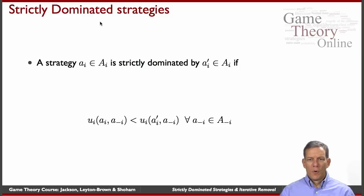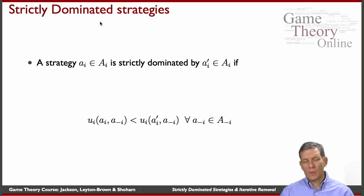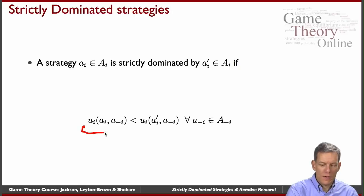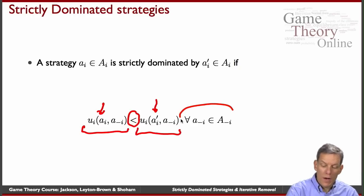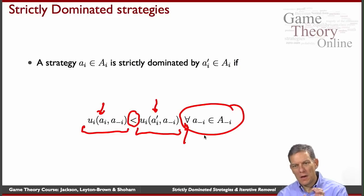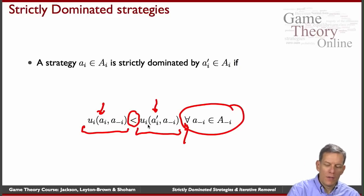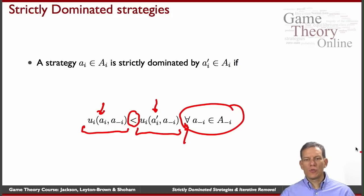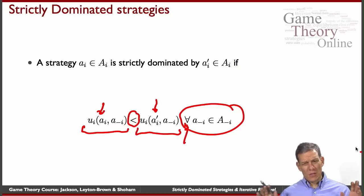In formal notation: a strategy a_i for some player i is strictly dominated by some other strategy of the same player, a'_i, if the payoff that the person gets from playing a_i — the one that's strictly dominated — is strictly lower than the payoff they would get by playing a'_i, no matter what the other players do. So for every possible strategy of the other players, a_i is worse than the payoff from a'_i. There's no circumstance in which it can do as well — it always does strictly worse.